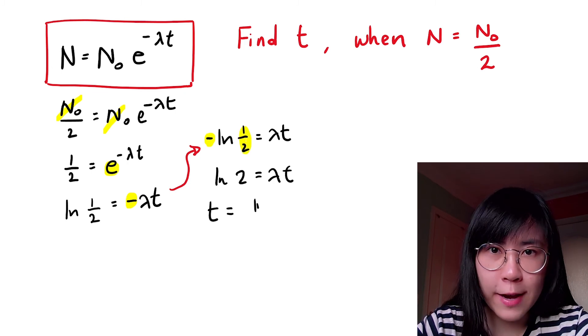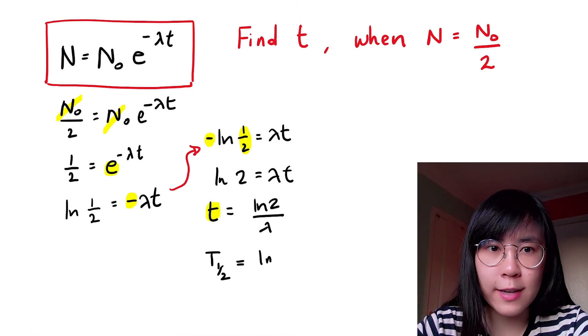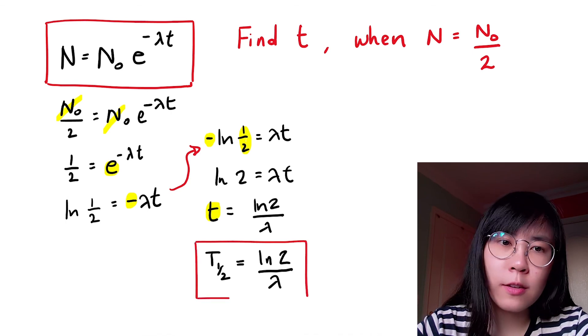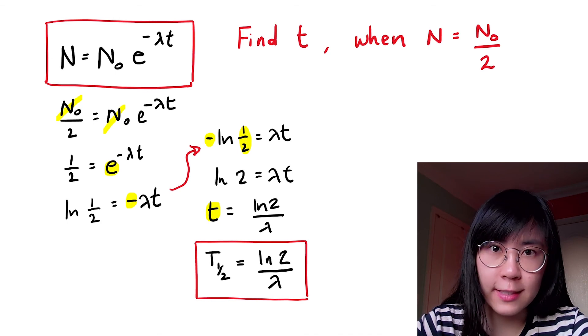And remember, we're trying to find an expression for half-life. And the symbol for half-life is commonly written as t subscript a half. And here's the final form of our equation relating half-life to the decay constant.